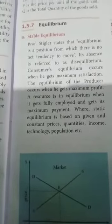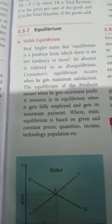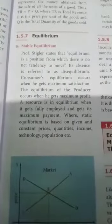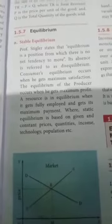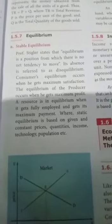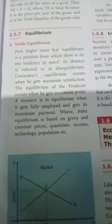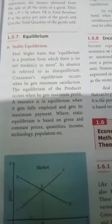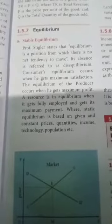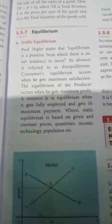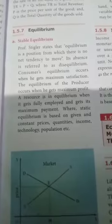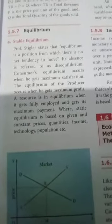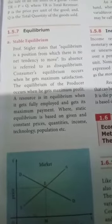When the producer moves into an equilibrium position, he gets maximum payment. When the resource is in an equilibrium position, it gets maximum employment and maximum payment. A resource is used in a way that we get maximum payment.